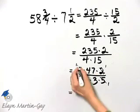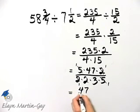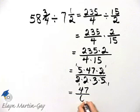And we have left one times forty-seven times one, which is forty-seven, over two times three times one times one, which is six.